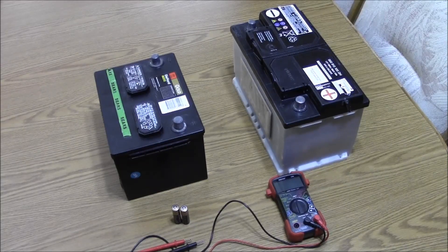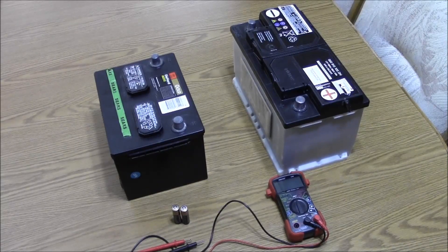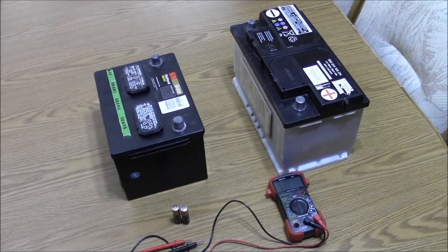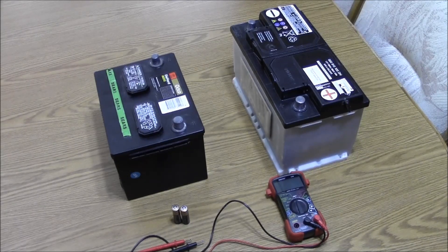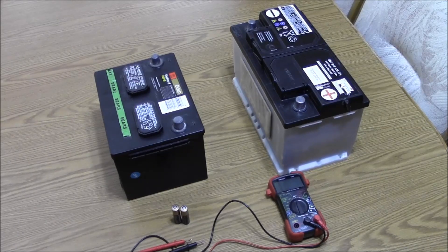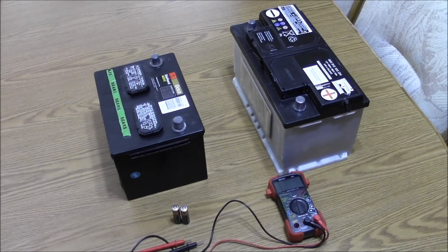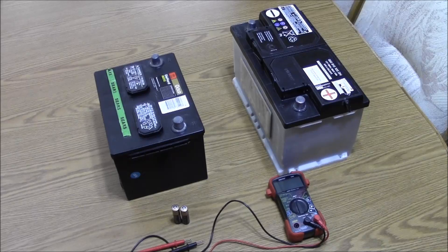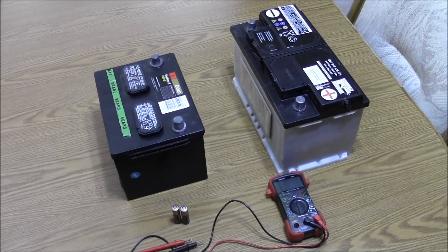Now if they were wired in series, that would mean that the positive of one battery would be wired to the negative of another battery. If they were wired in series, that would actually double the voltage output, going from a 12 volt battery to a 24 volt battery.